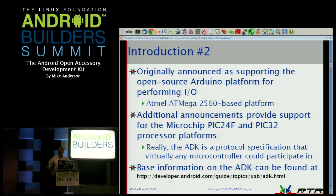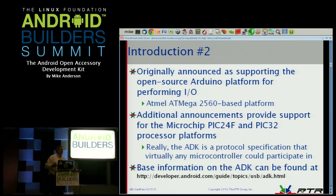They subsequently expanded the platform. In the first release, they said it would be the Arduino 2560, and then the folks from Microchip said, 'What about PIC24 or PIC32?' And it turned out that really the Accessory Development Kit is a specification for a protocol — as long as your device speaks the protocol, there's no reason why you couldn't have any arbitrary part talking to Android. There is base information for the ADK at a particular web link that gets into details about which devices are supported and how to hook them up.